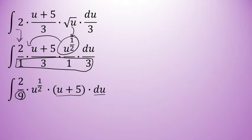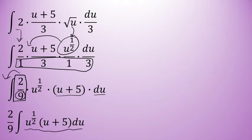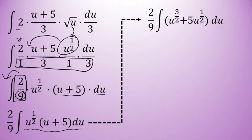Already, the problem is looking much more manageable. Because there is a constant in front, I can move that outside of the integration symbol. I'll only integrate u to the 1 half times the quantity of u plus 5, and the 2 ninths, the constant, will come along for the ride. The next thing I'll do is distribute u to the 1 half through the quantity of u plus 5. Remember, when you distribute, you are multiplying, and when you multiply, you add the exponents. u to the 1 half times u to the first is u to the 3 halves, and u to the 1 half times 5 is simply 5u to the 1 half.